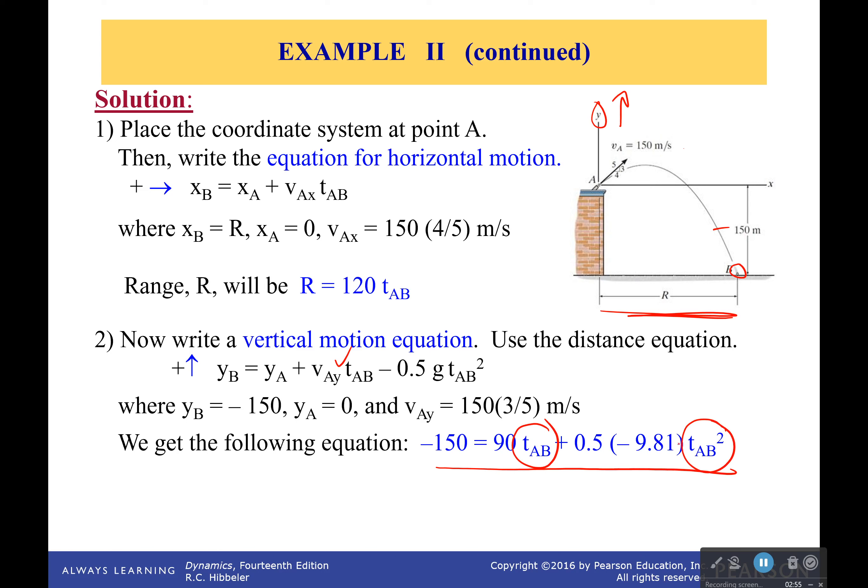Now what you're going to see very quickly here is that it's going to have two solutions, and only one of those will hopefully make sense. So if we solve for t_AB, we can get 19.89 seconds, and when we plug it in, that means that the ball went 2,387 meters.